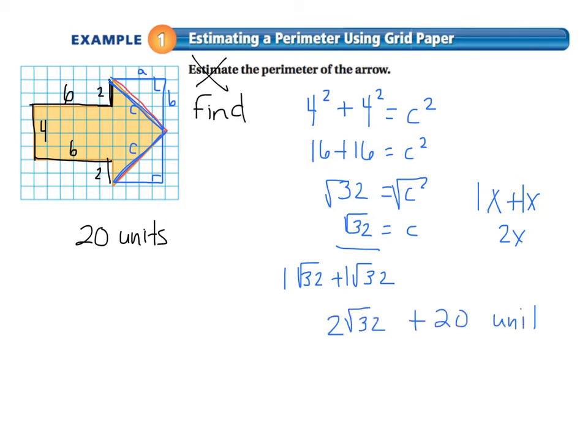And then units would be your answer. That's actually, in high school terms, how you would write the answer, the exact answer. 2 root 32 plus 20. Because the square root of 32 is going to give me a decimal, which is fine. But an exact answer would be this.